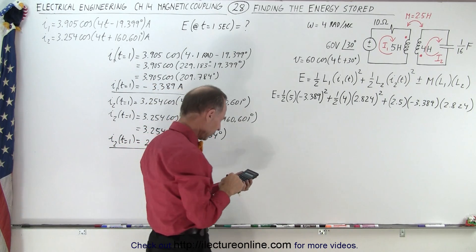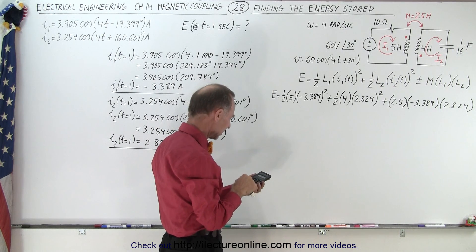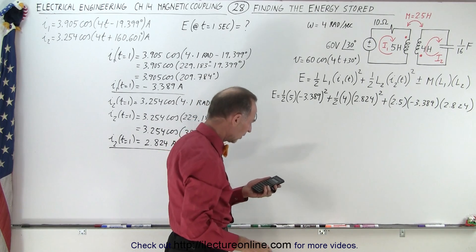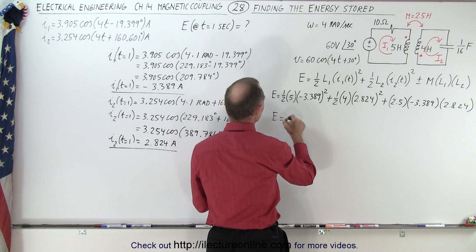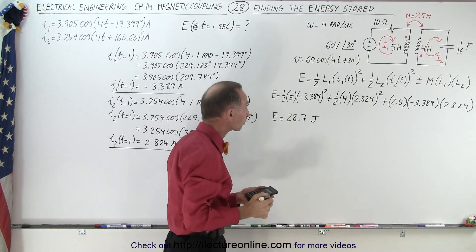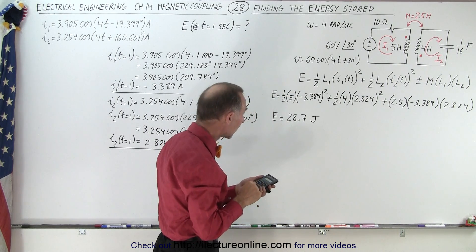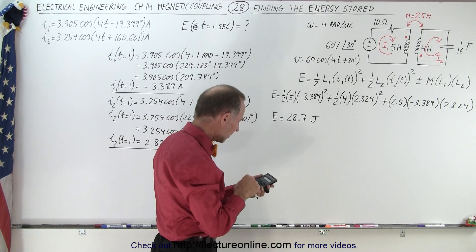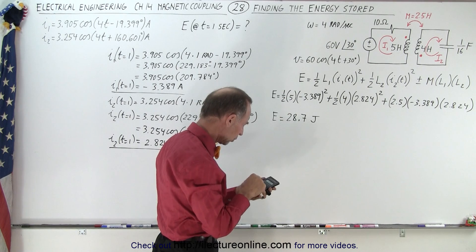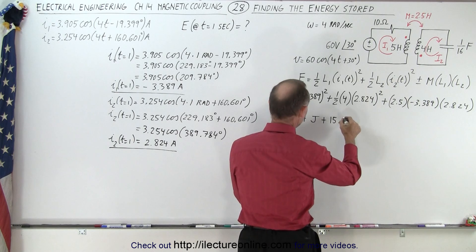Let's work this out. We have 3.389 squared times 2.5, and that gives us 28.7 joules. E is equal to 28.7 joules. Next one, plus 2.824 squared times 2, so that would be plus 15.95 joules.